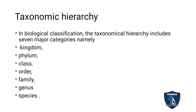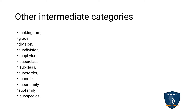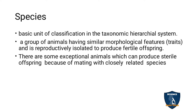The seven main categories are: Kingdom, Phylum, Class, Order, Family, Genus, and Species. The other intermediate categories are: Subkingdom, Grade, Division, Subdivision, Subphylum, Superclass, Subclass, Superorder, Suborder, Superfamily, Subfamily, and Subspecies.